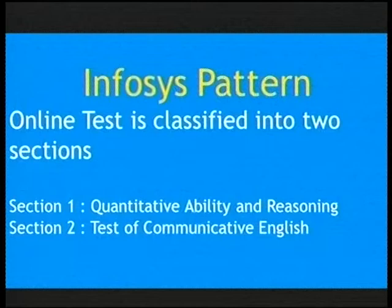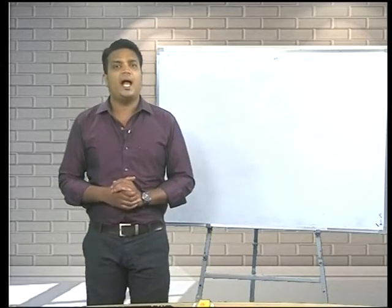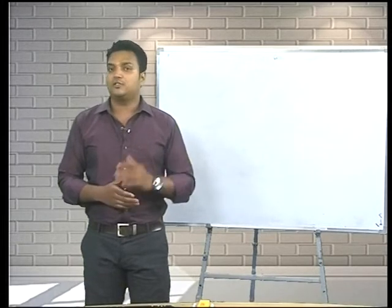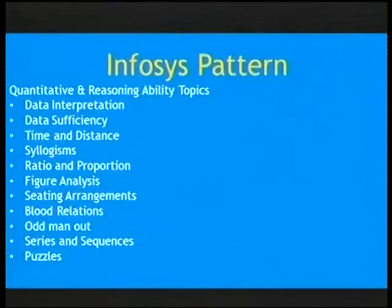It's not mandated that you have to write section one first — you might get verbal ability first and quantitative second, or vice versa. Section one has 30 questions and the timing is 40 minutes. So 30 questions and 40 minutes is the equation. These are the topics that you have to be well-versed in for the Infosys pattern before you attend the examination.